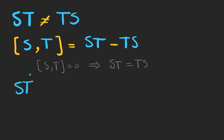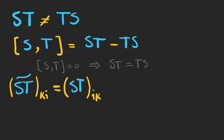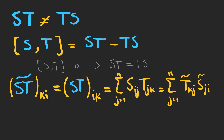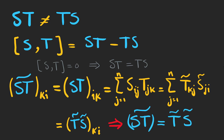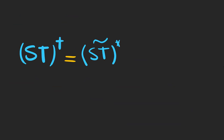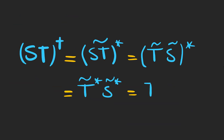Now let's find the transpose of ST. We take the ki-th elements and interchange rows and columns, which can be written in component form. Writing each component as a transpose, we see that (ST)-transpose equals T-transpose times S-transpose. Similarly, (ST)-dagger equals T-dagger times S-dagger.